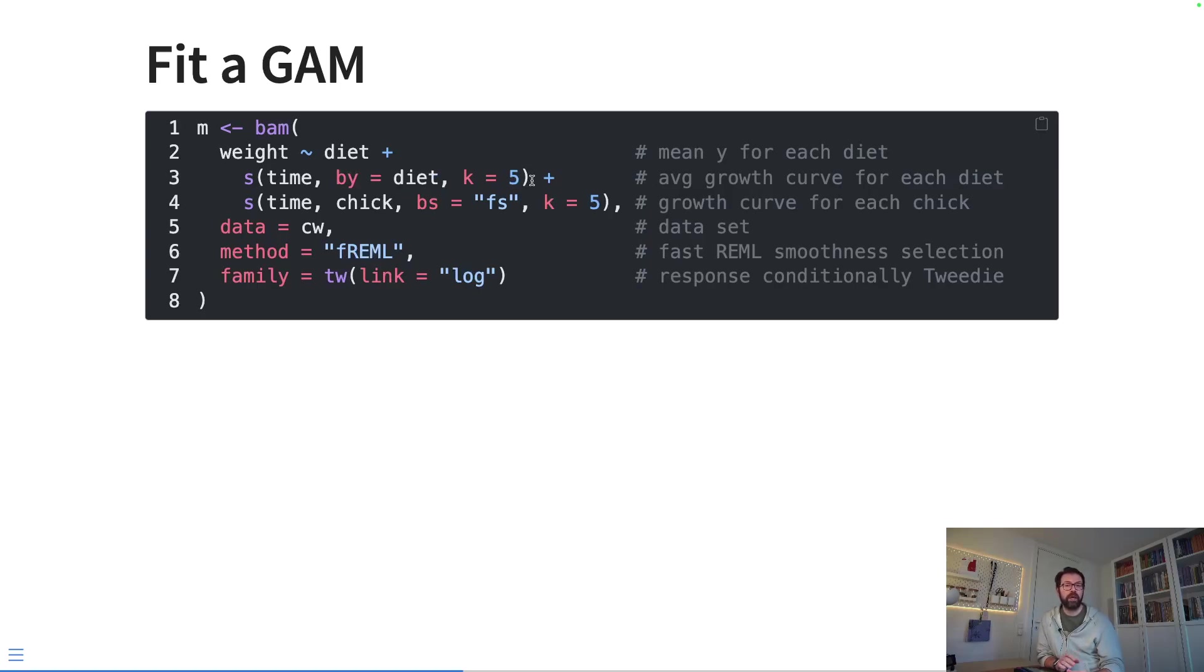Then we have to do that because we're using a factor-by smooth, so we're also including a smooth here for each—a smooth of time for each of the four diets. We're keeping them relatively simple. I'm just using, well, setting k to be five, so there'll be four basis functions here for this smooth.